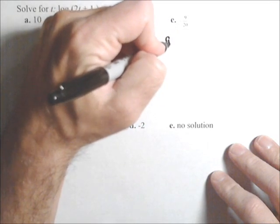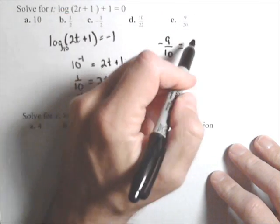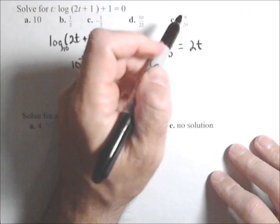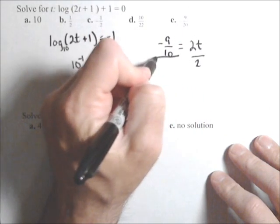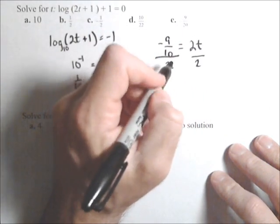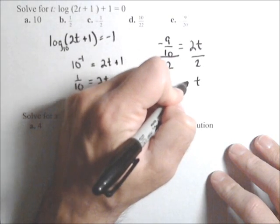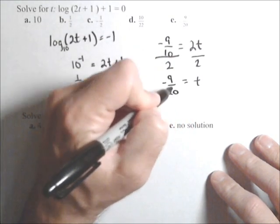So I have negative nine over 10 equals 2t. Dividing both sides by two or multiplying by one half, I get t equals negative nine over 20.